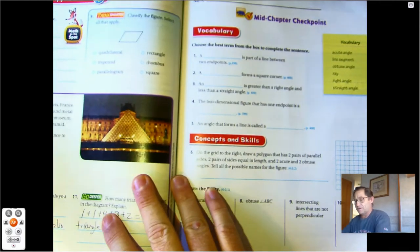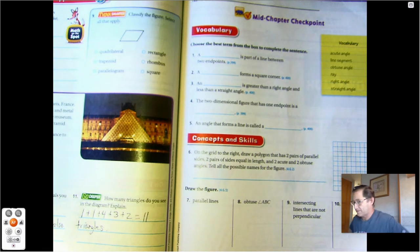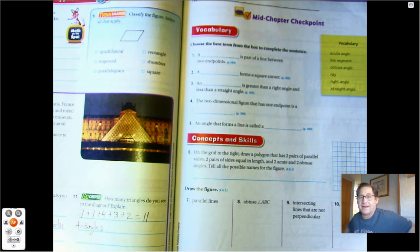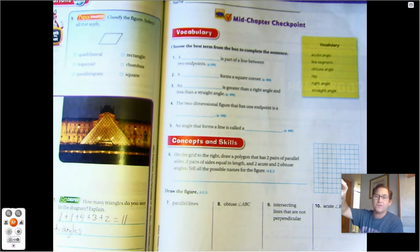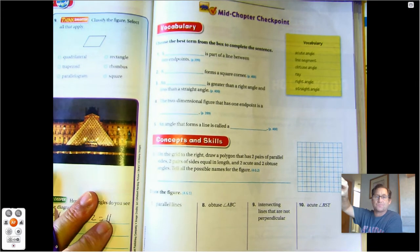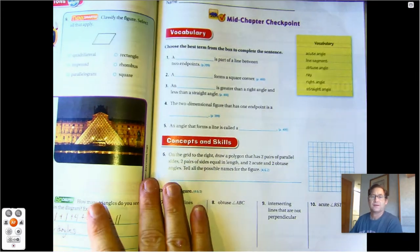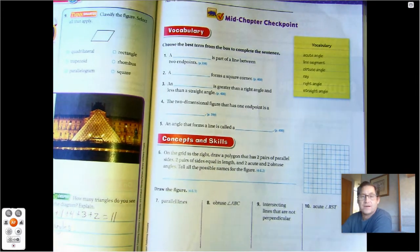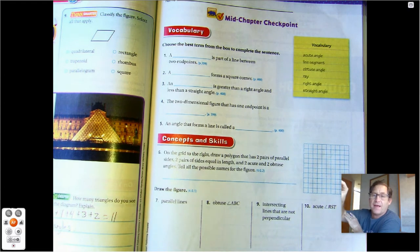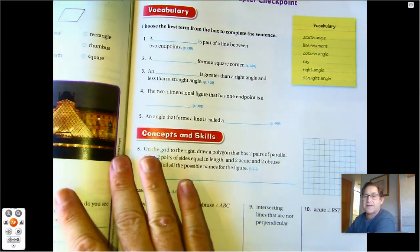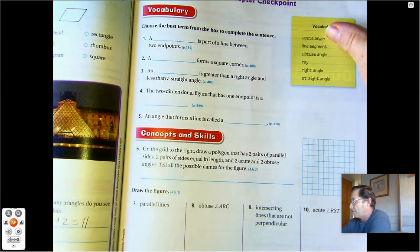Good morning, so we're going to continue with our discussion of Chapter 10. We're going to be reviewing for the mid-chapter checkpoint today. Let's start with page 419 and let's do the vocabulary section. So we're looking for acute angles, line segments, obtuse angle, array, right angle, and straight angle.